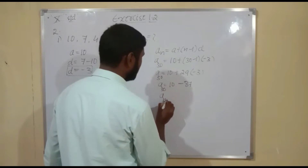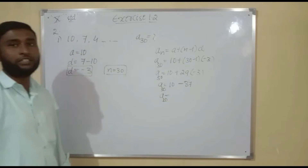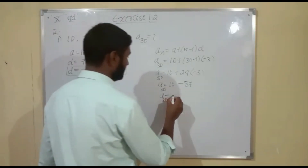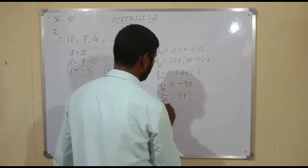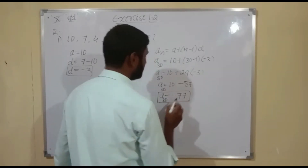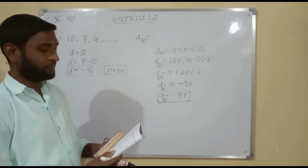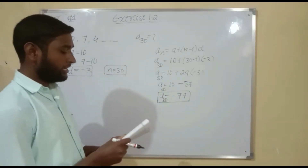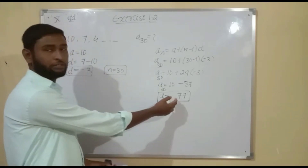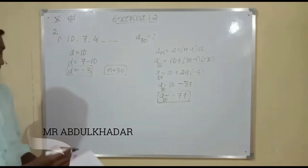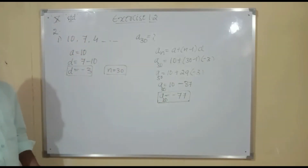A30 is equal to 10 minus 87, which is nothing but minus 77. So A30 is minus 77. Looking at the options A, B, C, and D, option C is given as minus 77, which is correct. So option C is the correct answer for this arithmetic progression.